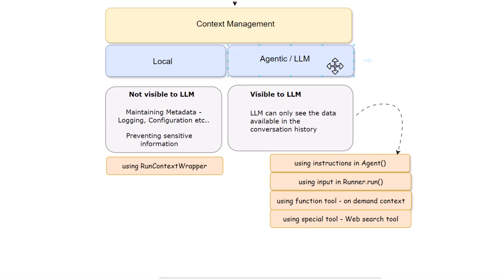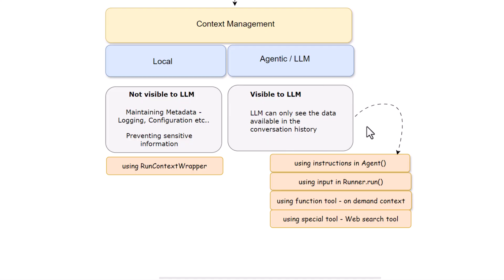In LLM context management, the information is going to be visible to LLM. The context is basically passed in the form of conversation history, so LLM can only see the information which is there in its conversation history and cannot see any other information.